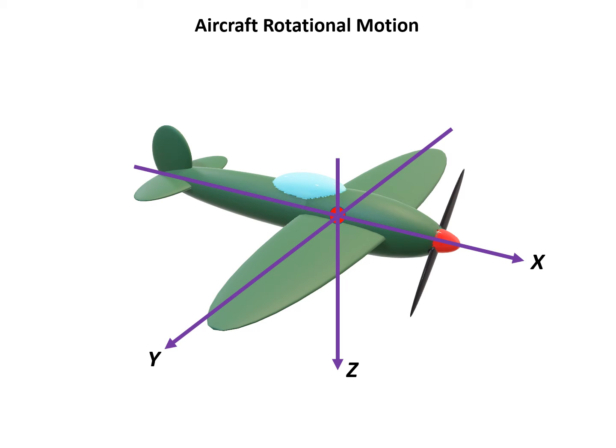Now let's look at the aircraft rotational motion. We can see an aircraft — the red dot, which is the origin of the three axes, is the center of gravity. We can see three axes: x, y, and z. X is longitudinal, following the longitudinal direction of the aircraft. Positive y points to the right wingtip, and z is pointing downwards.